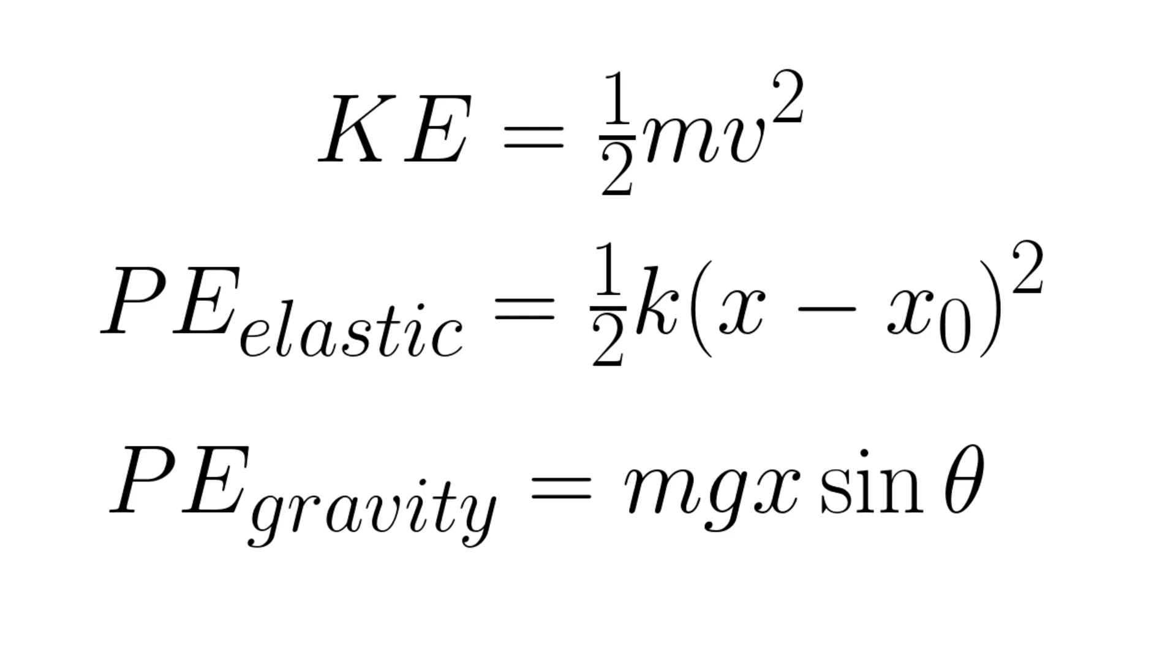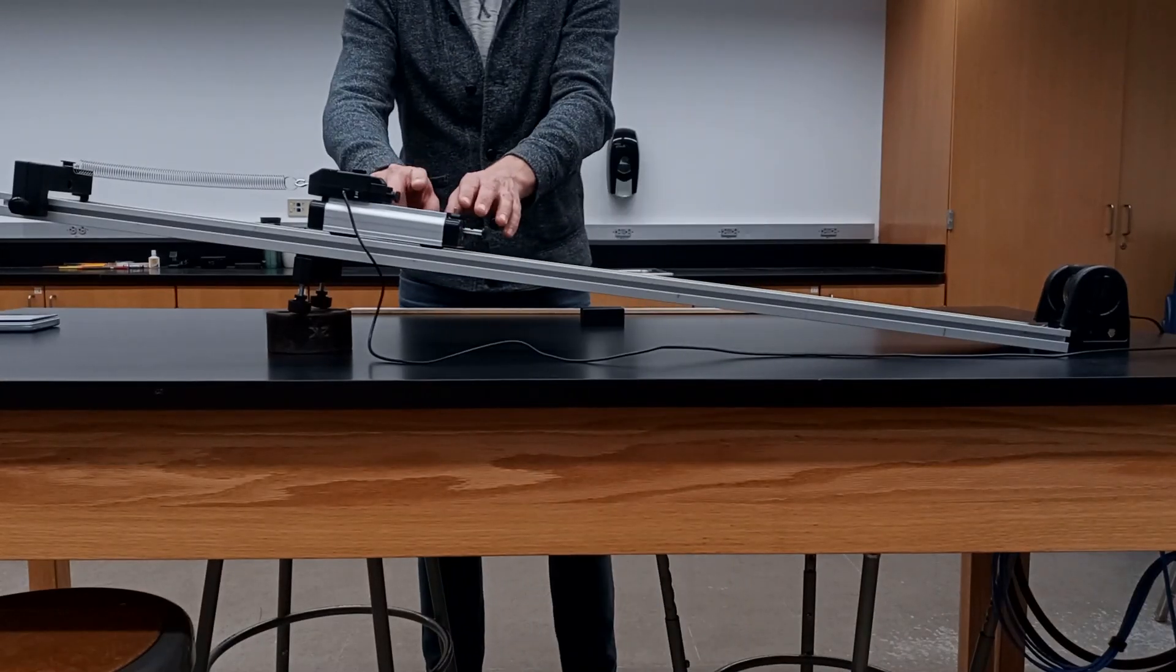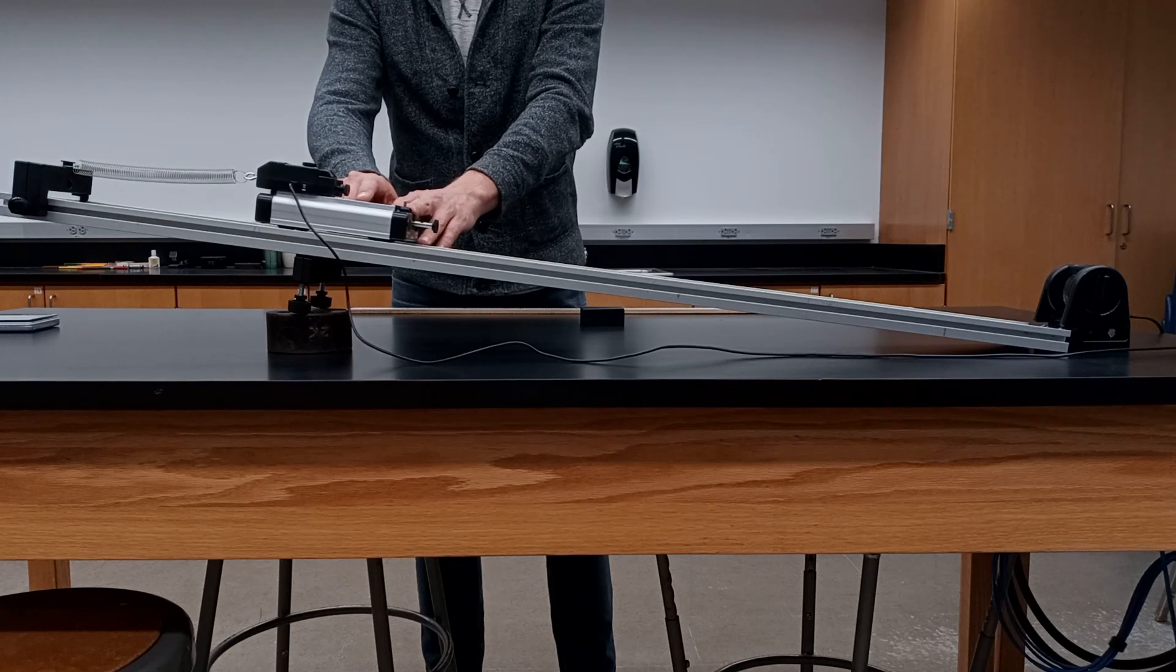We can measure the spring constant directly using this setup, by beginning to take some data, and then moving the cart to different positions on the track and holding it steady for a moment.